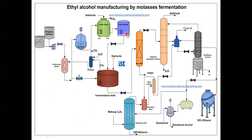This is the process of formation of ethanol from the molasses. This diagram I have taken from the InclusiveScienceEngineering.com. Now we will see one by one. Molasses is stored in this molasses storage tank. Molasses is generally a liquor obtained as a byproduct of the sugar industry. Molasses is a heavy viscous material which contains sucrose, fructose and glucose.